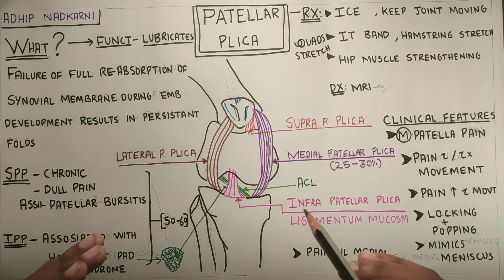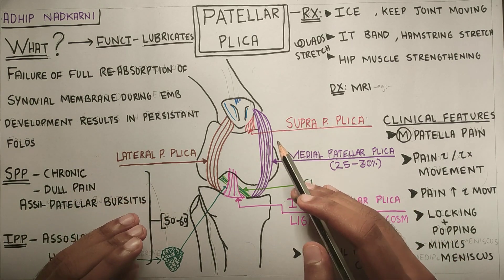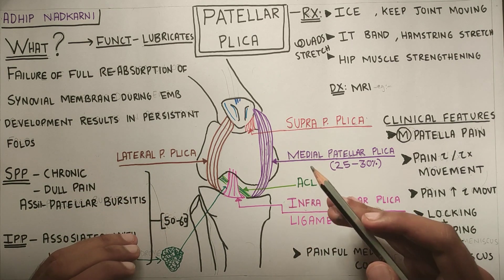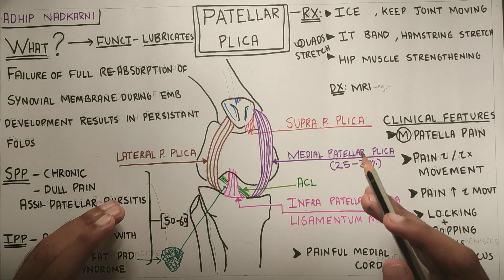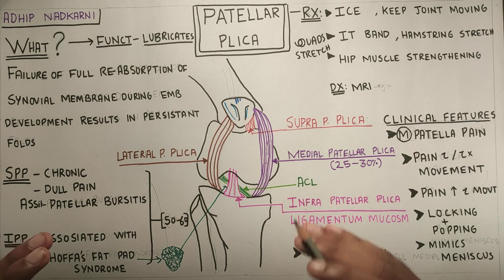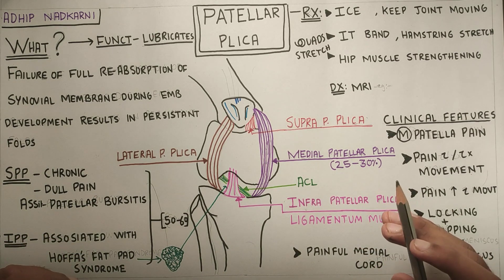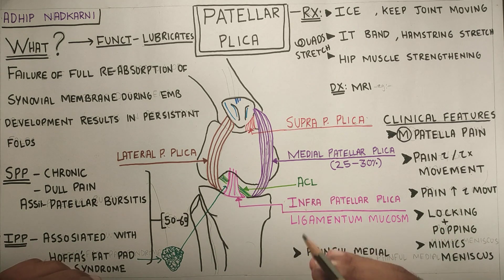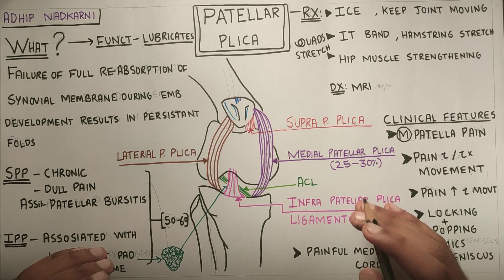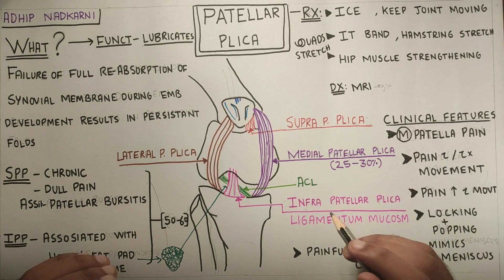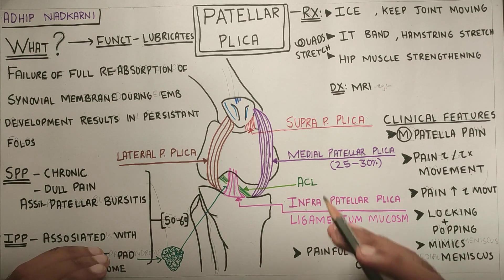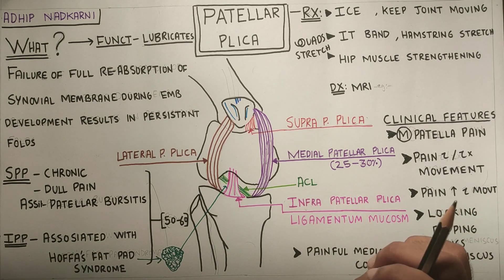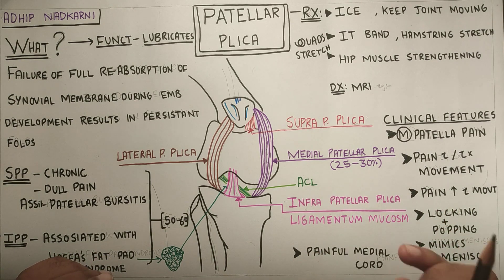So once you have addressed the problem from the sides, now you have to come up with a solid solution — this is where hip muscle and proximal muscle strengthening comes in. Once you have strengthened your proximal muscles, your knee joint will have way less load, and hence hip muscle and proximal muscle strengthening is the key to prevention of further patella plica irritation. And that's how you save your relationship — sorry, that's how you treat your patella plica syndrome.